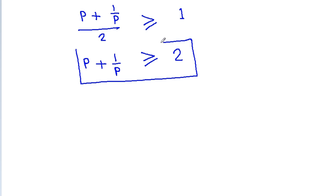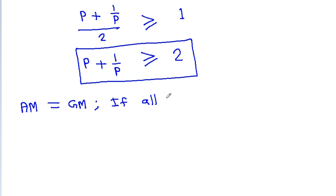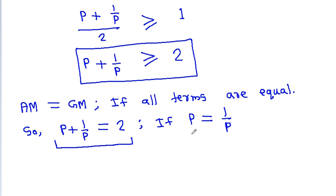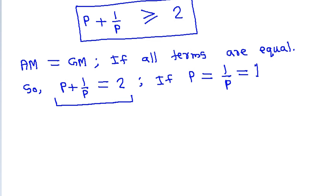And AM is equal to GM when both terms are equal. So p plus 1 by p will be equal to 2 when p is equal to 1 by p, meaning p equals 1. Now we have given that x squared plus y squared plus 1 by x squared plus 1 by y squared is equal to 4.